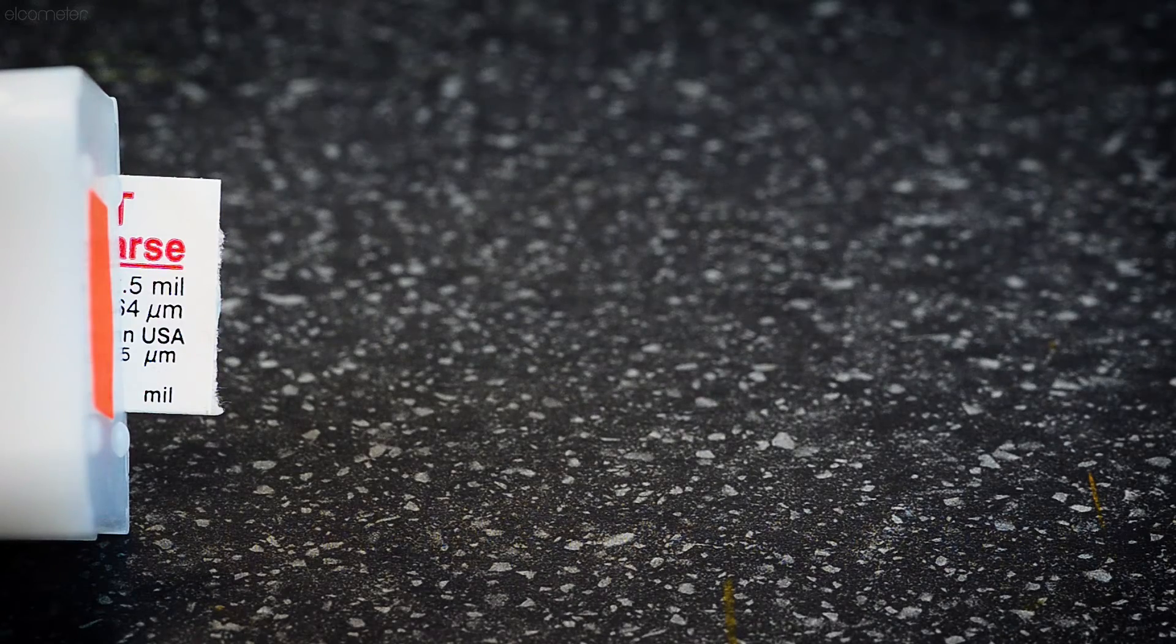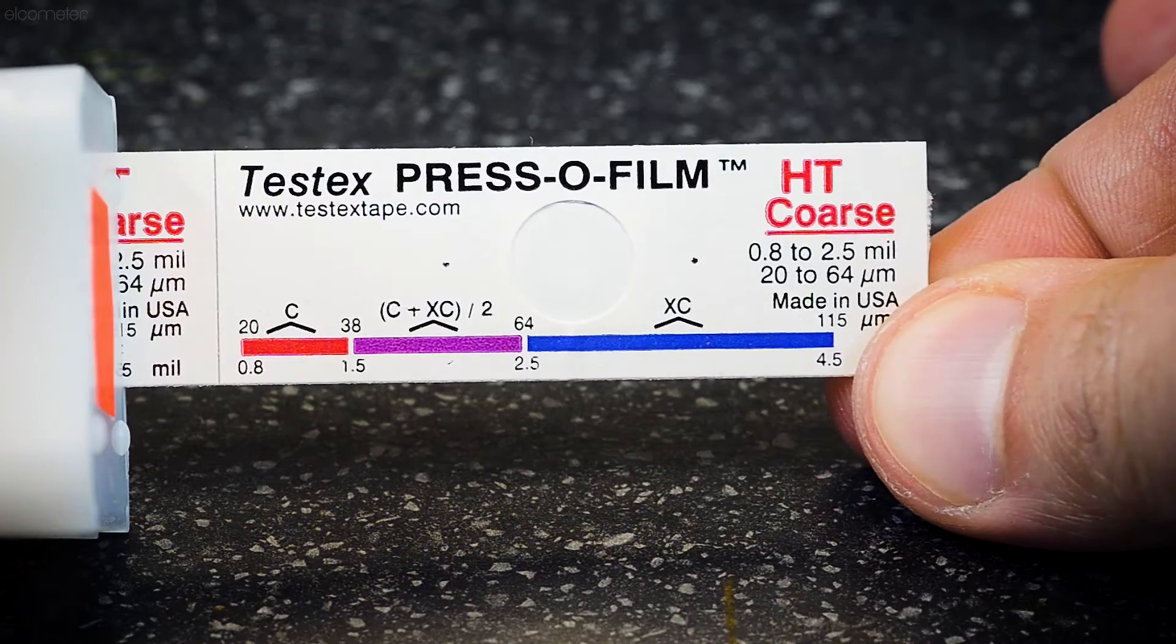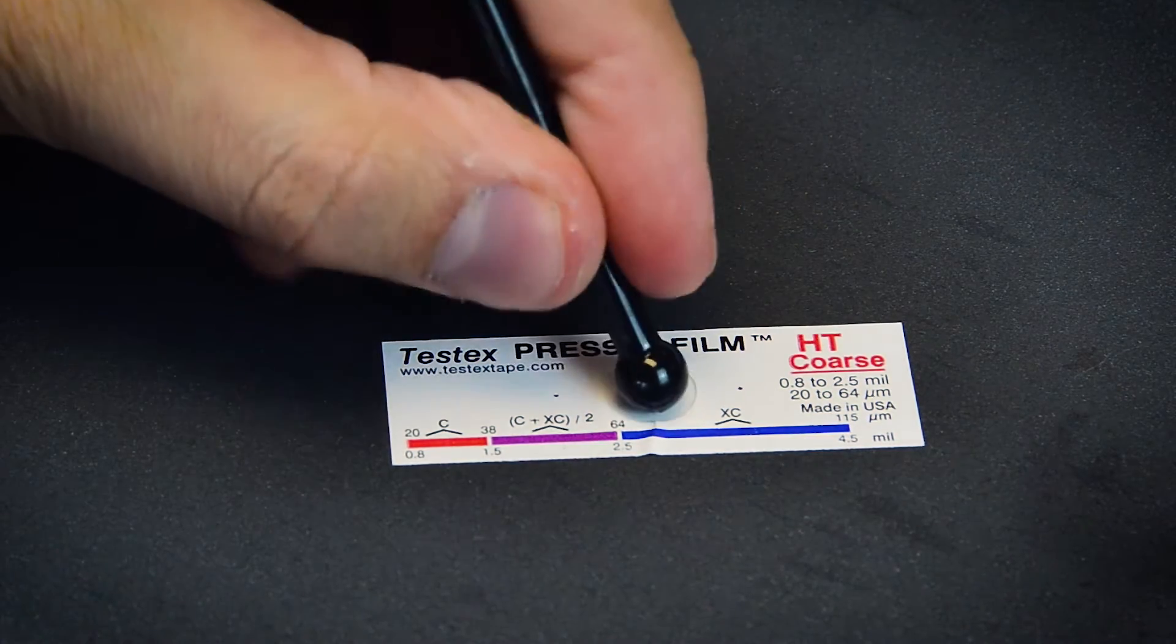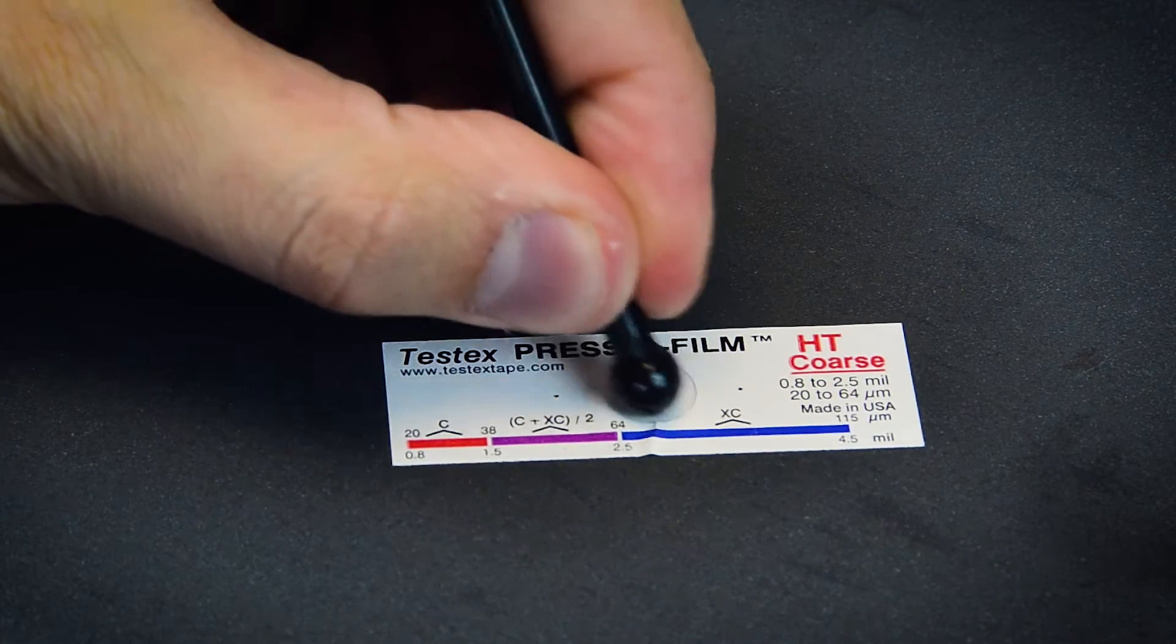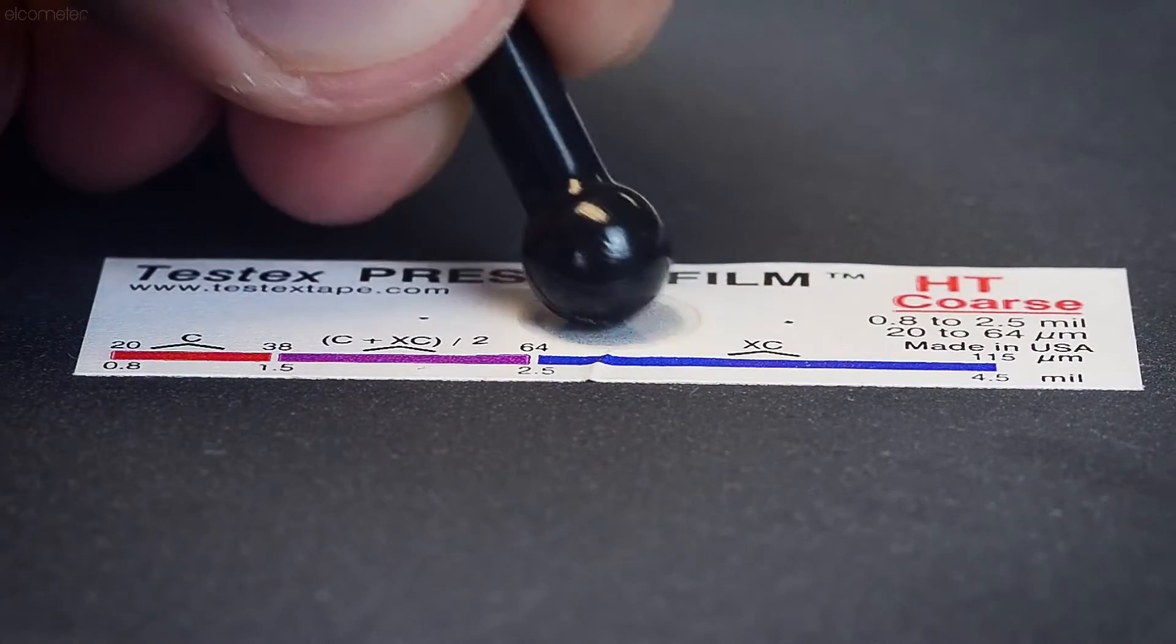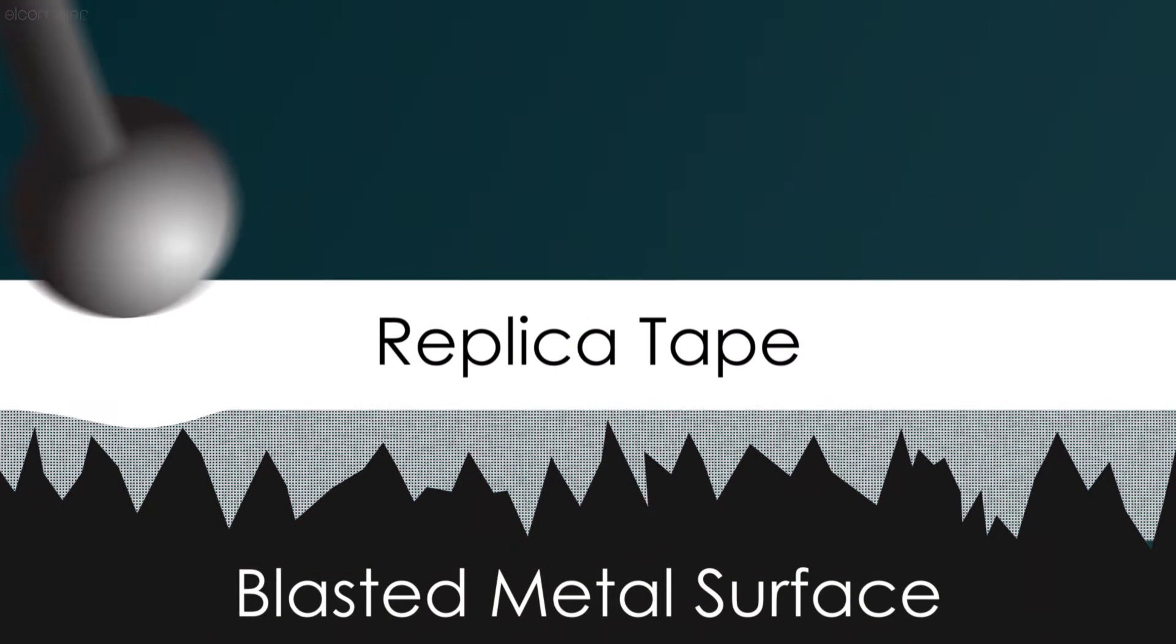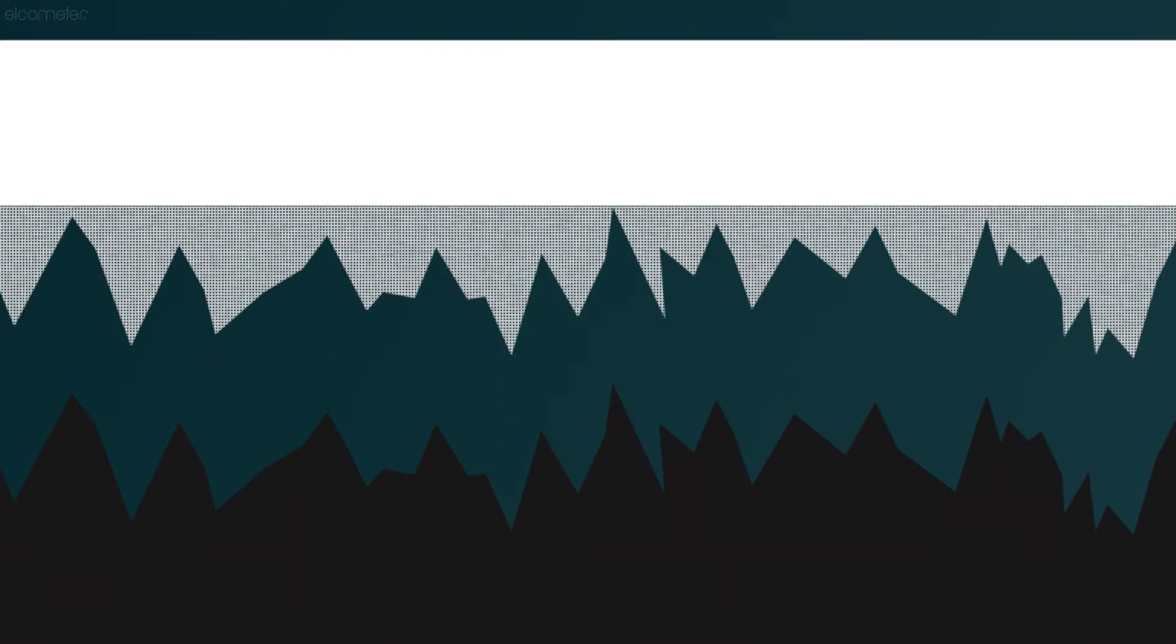A widely used and less subjective alternative is the replica tape method. A tape with a compressible foam pad is applied to the surface and rubbed with a burnishing tool. By rubbing the tape into the surface, the foam is pushed down, creating an inverse or mirror image of the profile.